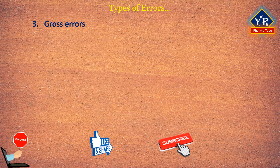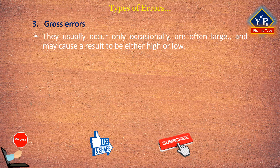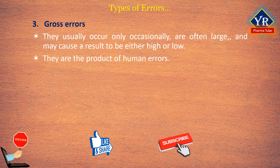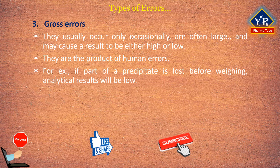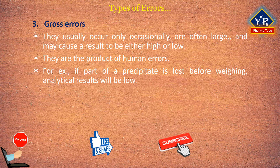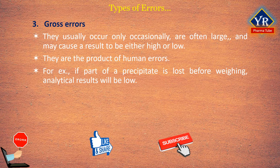Gross errors differ from systematic and random errors. They usually occur only occasionally, are often large, and may cause a result to be either high or low. They are often the product of human errors. For example, if part of a precipitate is lost before weighing, analytical results will be low. Touching a weighing bottle with your fingers after its empty mass is determined will cause a high mass reading for a solid weighed in the contaminated bottle. Gross errors lead to outliers — results that appear to differ markedly from all other data in a set of replicate measurements.